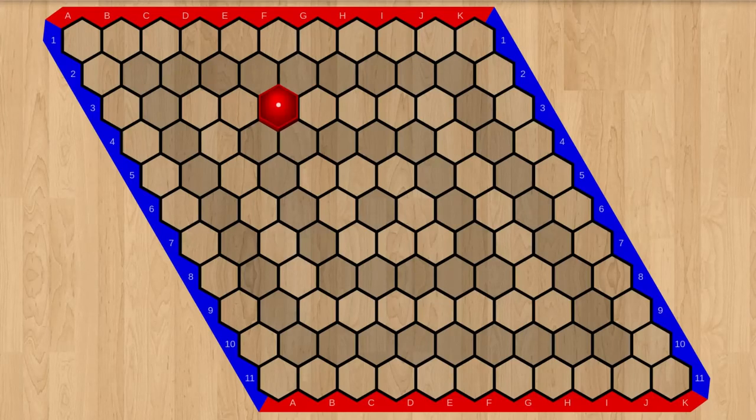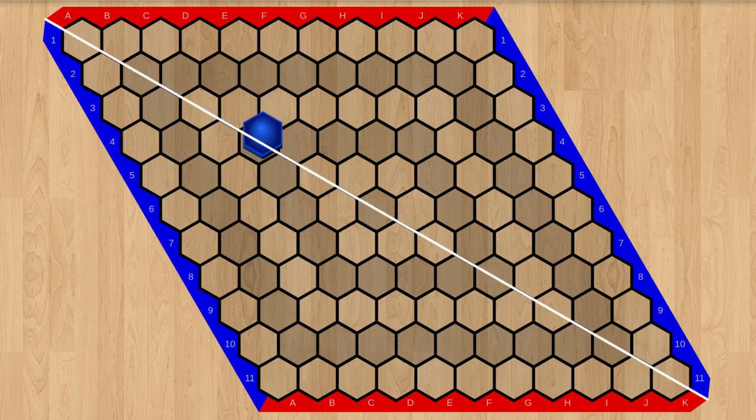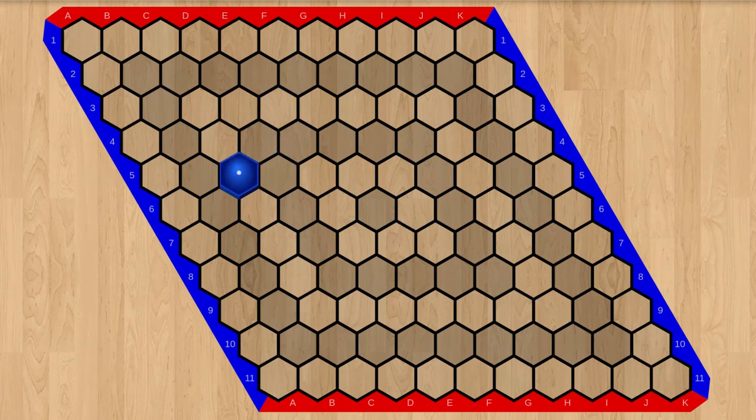This is done by changing their opponent's red stone to a blue stone and moving it to the opposite location on the board. Swapping is only possible in the second move of the game.